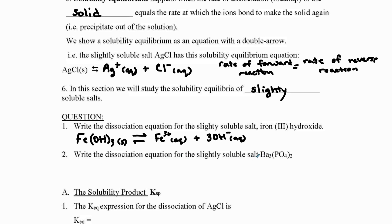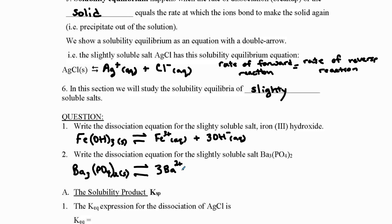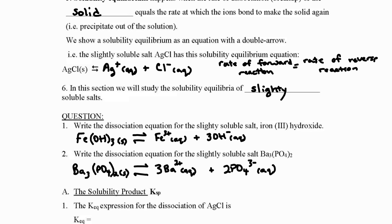Another one we can try is barium phosphate. We already have the formula: Ba₃(PO₄)₂. It's a slightly soluble solid, so it breaks apart into three barium ions each with a +2 charge, and two phosphate ions each with a −3 charge. That's some practice with material you've already learned.